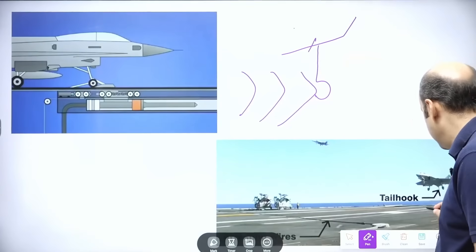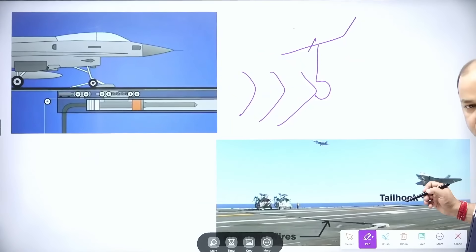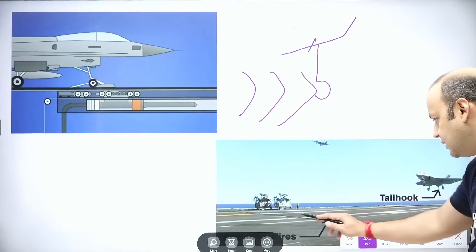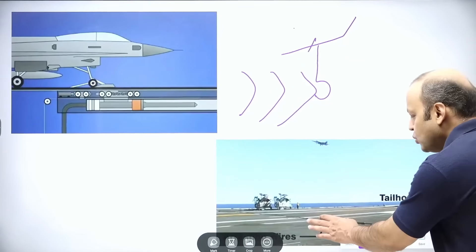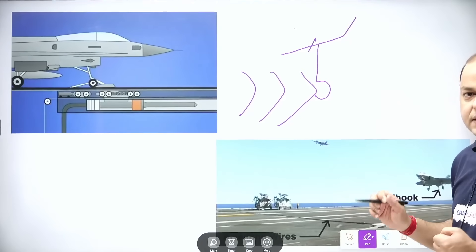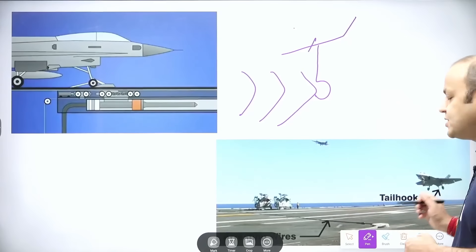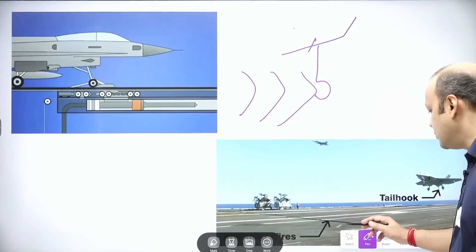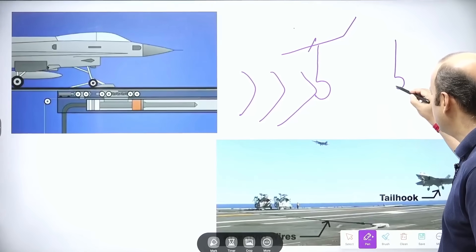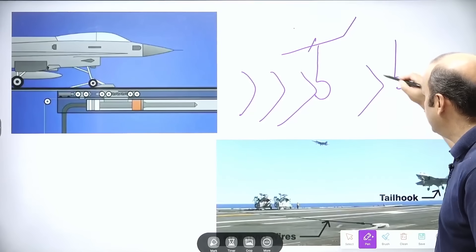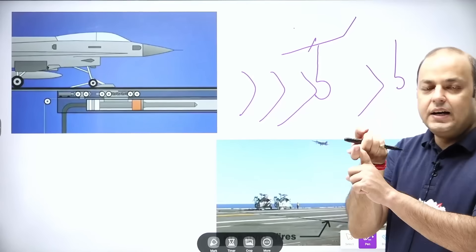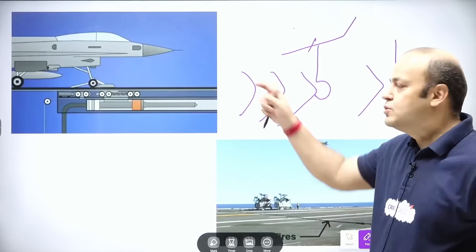As you can see in this diagram, this is the tail hook and these are the wires, known as arresting wires — that is why the process is called 'arrested' recovery. These wires are placed such that the hook gets stuck in them and the aircraft eventually comes to a halt.